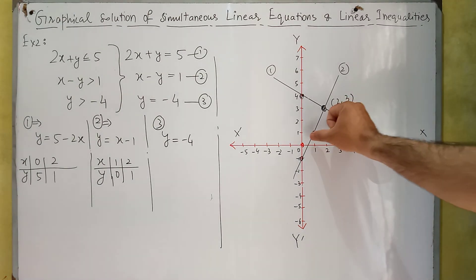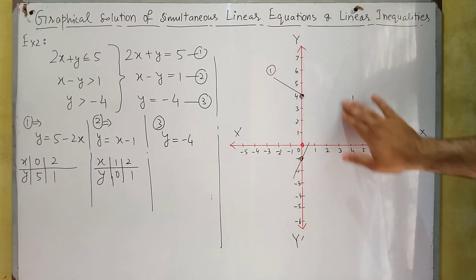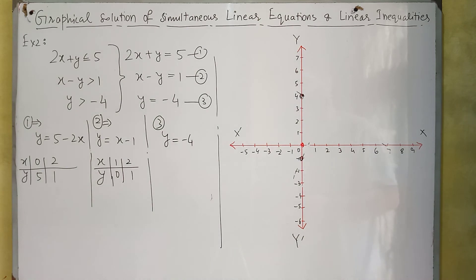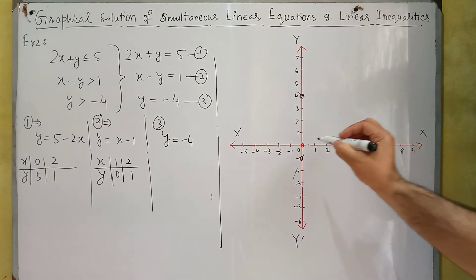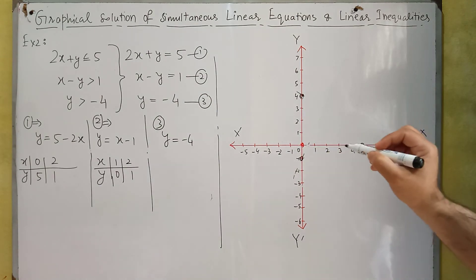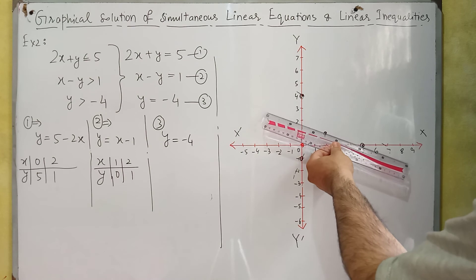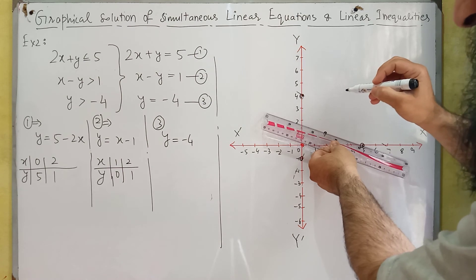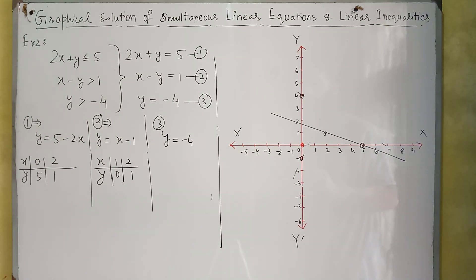Now let me erase the previous graph and we will find the solution of this system. For equation 1, the first coordinate is X = 0 and Y = 5, and the second coordinate is X = 2 and Y = 1. If we join these, we will have the graph of this equation.